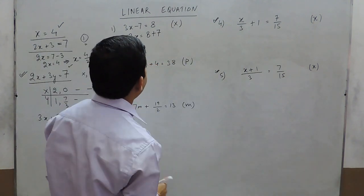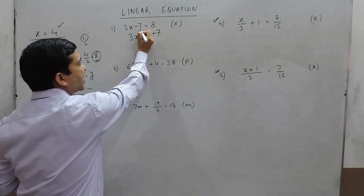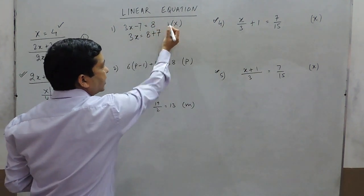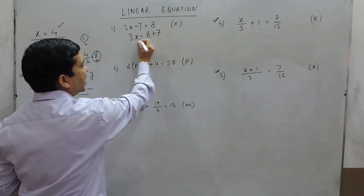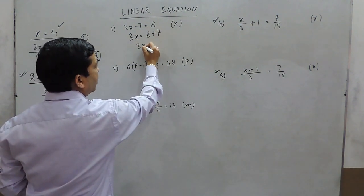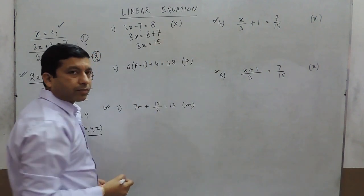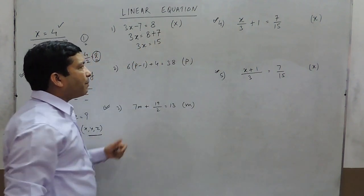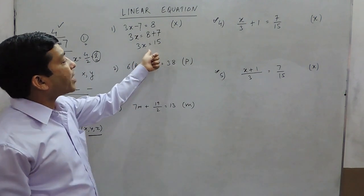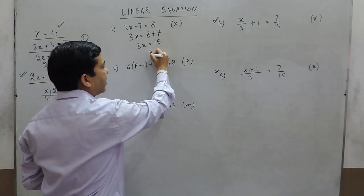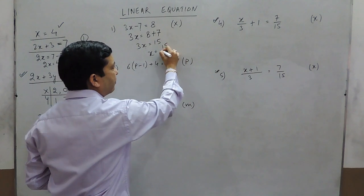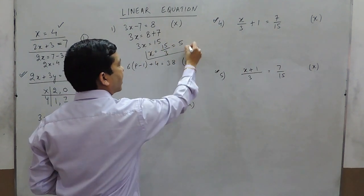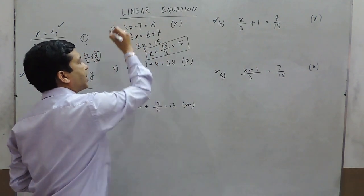So 7 is a constant and is taken to the right hand side, where the negative sign changes to positive. So 3x equals 8 plus 7, or 3x equals 15. Then 3 times x equals 15 — meaning x equals 15 upon 3, which gives the value of x as 5.